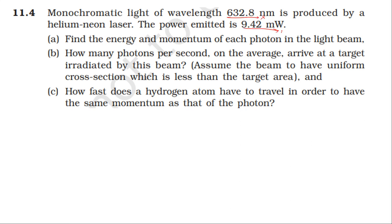So when we begin, we have the power. First, find the energy and momentum of each photon in the light beam. Energy is equal to hc by lambda. Energy equals 6.63 times 10 to the minus 34 times c, 3 times 10 to the power 8, divided by lambda, 632.8 nanometer, that's 10 to the power minus 9 meter.